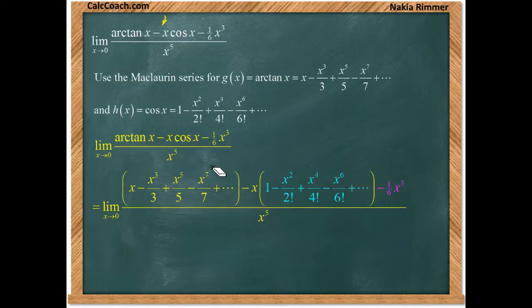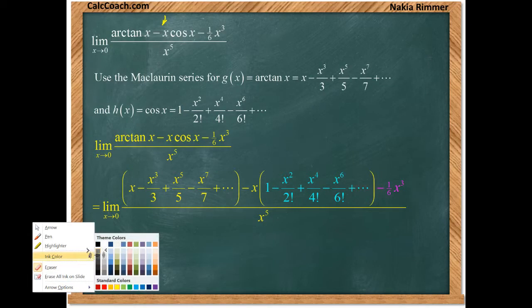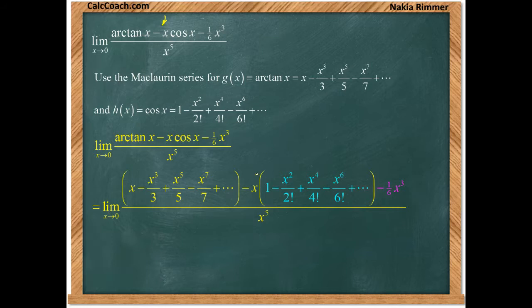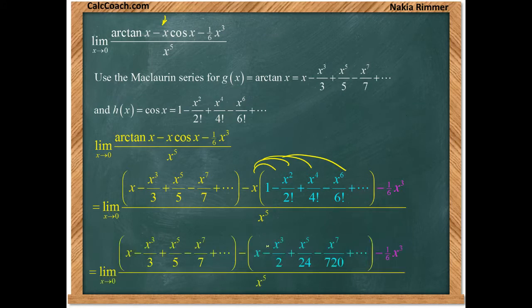What we should do next is distribute the x across the cosine x. So we have each power basically going up by one. We have x, x cubed over two, x fifth over twenty-four, x seventh over seven twenty. That's what six factorial is. And we have to combine the terms that are alike. Let's put them next to each other to make it easier to combine.